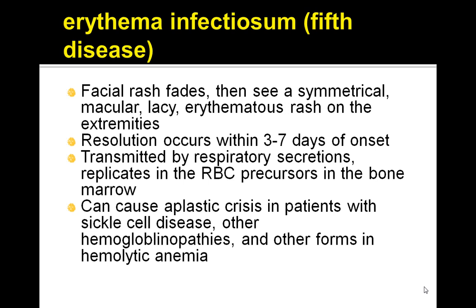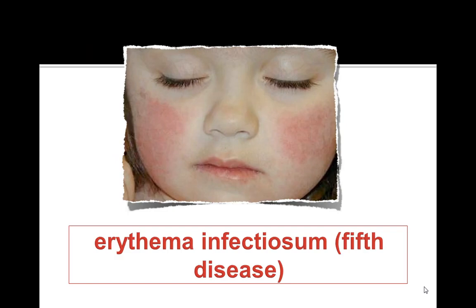It's transmitted by respiratory secretions and it replicates in the RBC precursors in the bone marrow. It can cause aplastic crisis in patients with sickle cell disease, other hemoglobinopathies, and other forms of hemolytic anemia. Here is a picture of erythema infectiosum, also known as 5th disease.